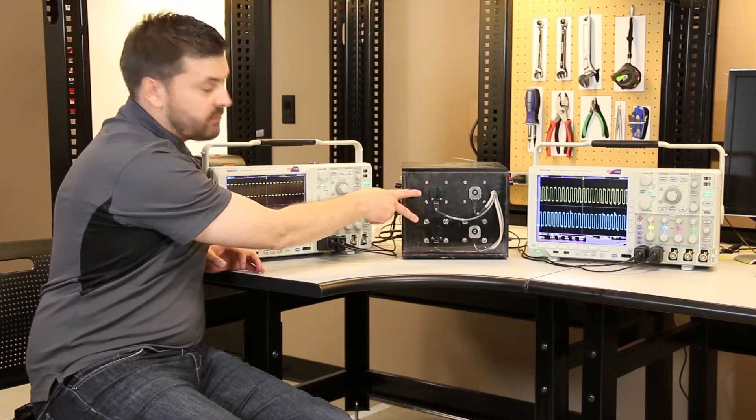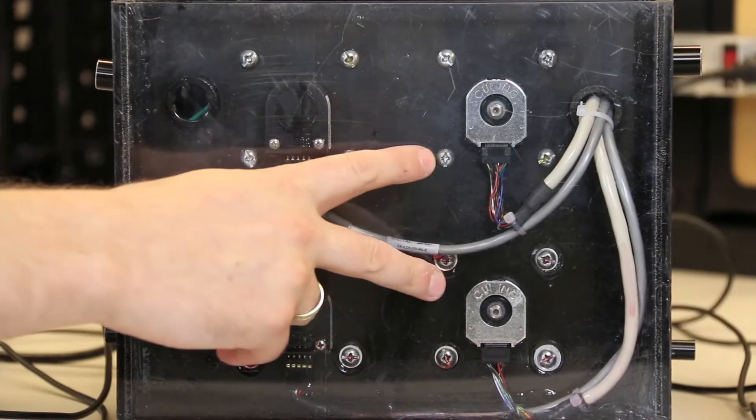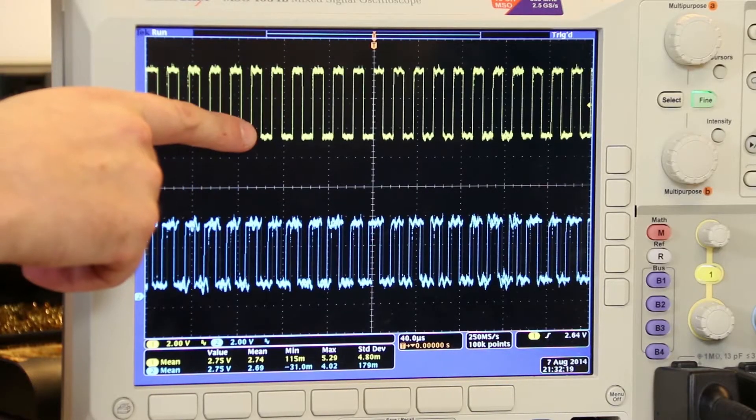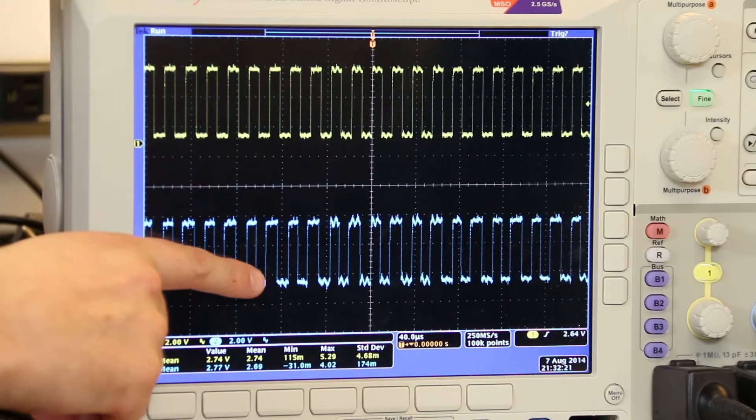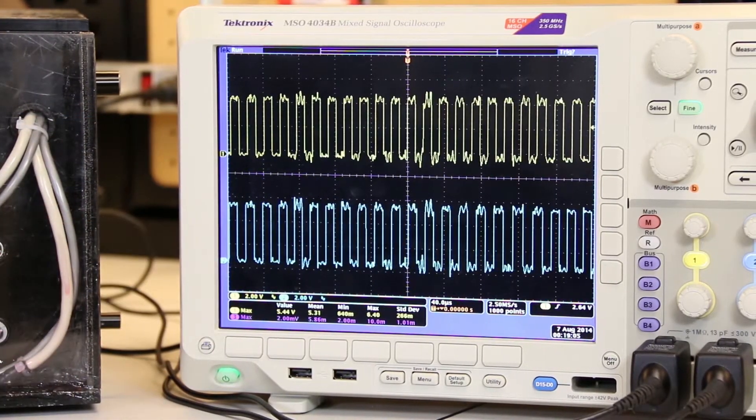We have two optical encoders set up and turning on motors here, and we have two AMT encoders set up on the far side. This scope is showing one of the output channels of the optical, and this is showing the output channels of the AMT encoder.